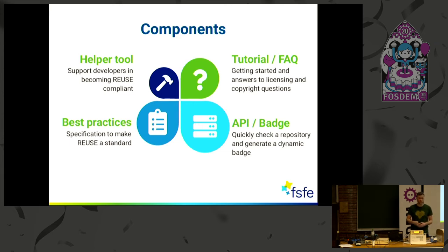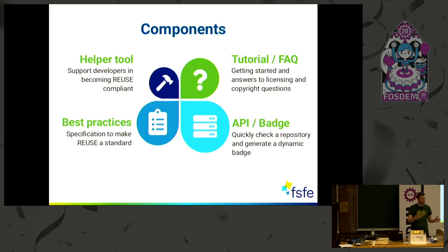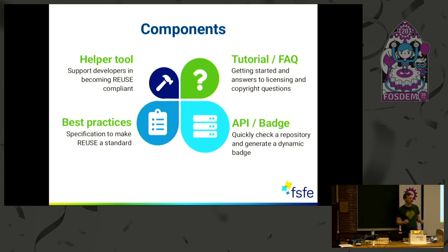If you have a free software project, it's now really simple. We have the best practices — not just nice words on a website, but a formal specification of Reuse. The idea is for this to become a standard for every free software project out there. There's a formal specification for source forges, companies, and projects that we constantly develop. And last but not least, we have something like Reuse as a service — we call it the Reuse API.